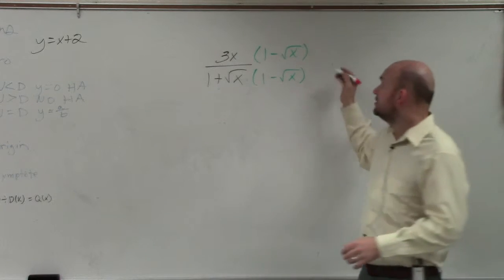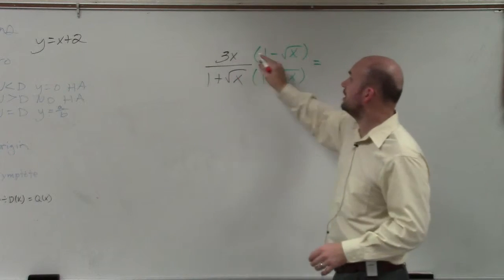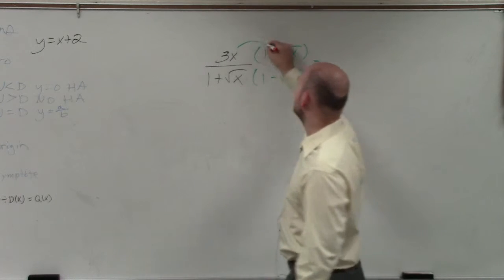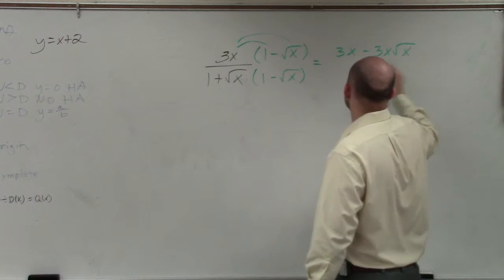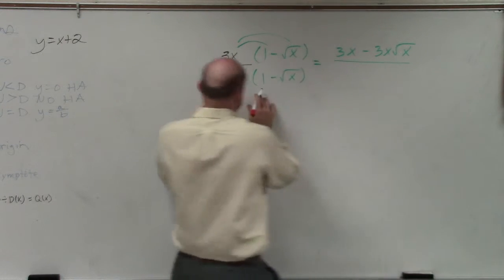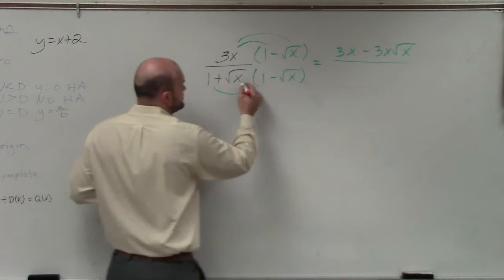So all you need to do up top is apply the distributive property. This becomes 3x minus 3x square root of x. The denominator, you just multiply the first terms and the last terms.